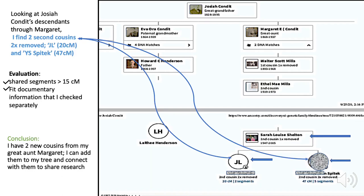Following from Josiah, I'm going to follow his daughter Margaret and her descendants down to J.L. and Miss Spittick. Those are two possible new second cousins with 20 centimorgans and 40 centimorgans shared respectively. I checked them through with documentation and found out that both of them have substantial records that show they are correct, so I added them as two new cousins to my tree.